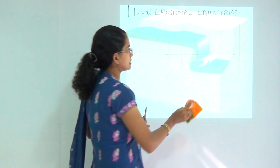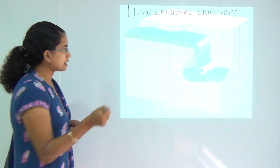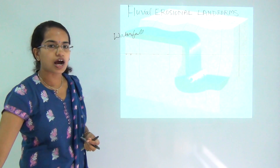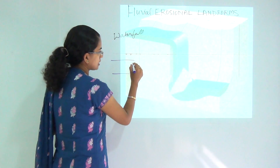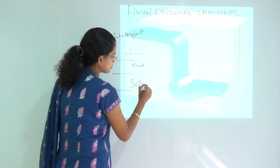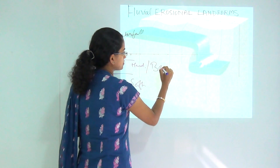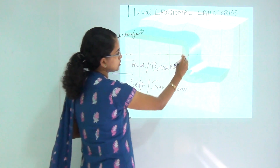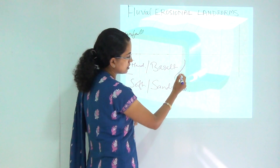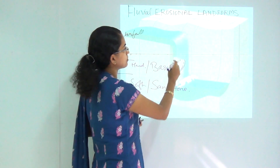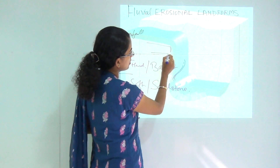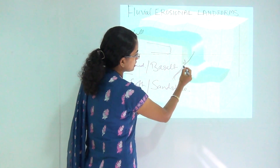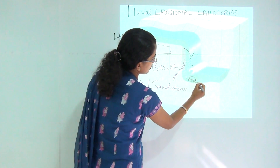Now let's move on to the much more interesting feature, which is the waterfall. In the case of a waterfall, the rocks are usually arranged in an alternate fashion. So you have a hard rock and a soft rock alternately arranged. An example of hard rock can be basalt, and an example of soft rock can be sandstone. What happens is the soft rock, as you can see in this animation, gets eroded at a much faster pace compared to the hard rock above. The hard rock remains and finally tumbles off, getting deposited below.